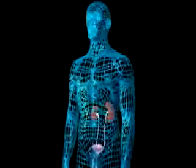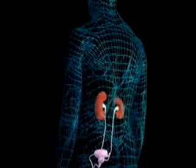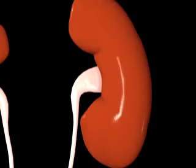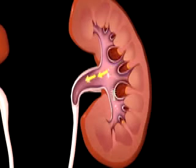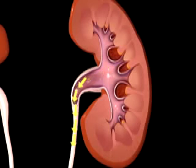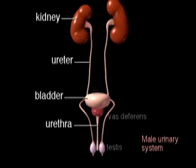One kidney lies on each side of your vertebral column. The kidneys are the primary organs concerned with body fluid and electrolyte regulation. Unneeded fluid and ions are excreted in the urine. Also contained in the urine are metabolic waste products, such as urea and uric acid, which form during the breakdown of proteins and nucleic acid. The combination of water, ions, and waste leave the kidneys as urine, which flows through the ureters and into the urinary bladder, which stores the urine until it passes out of the body through the urethra.